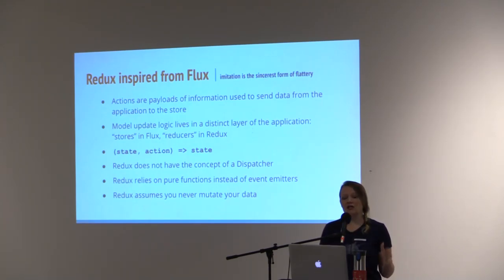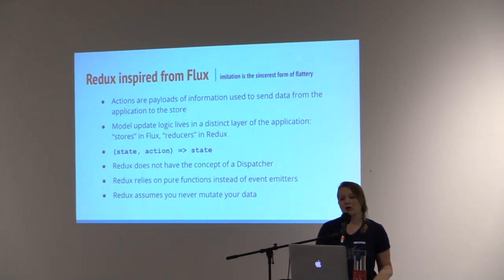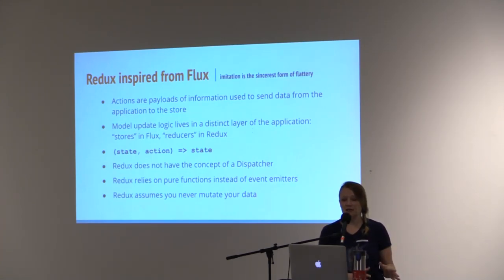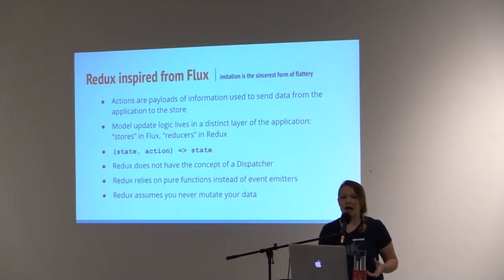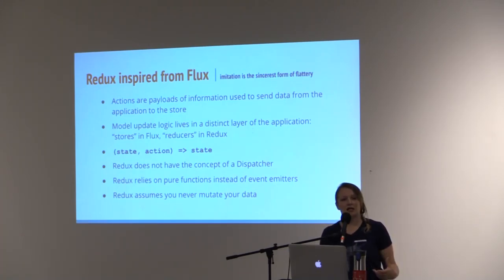The only way to change the state is to emit an action, an object describing what happened. This ensures that neither the views nor the network callbacks will ever write directly to the state. Instead, they express an intent. Flux has been described as a state and an action resulting in a new state. Redux is basically the same. Reducers are just pure functions that take the previous state and an action and return the next state.